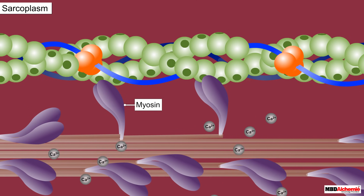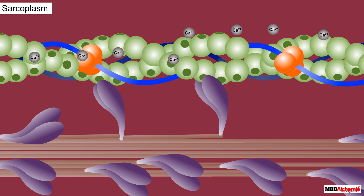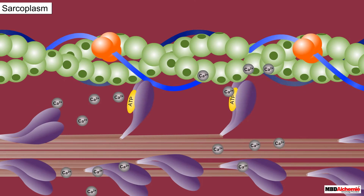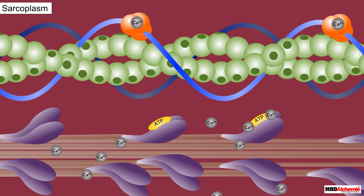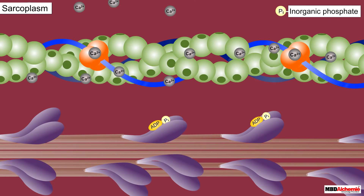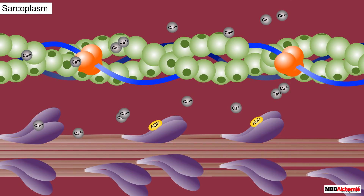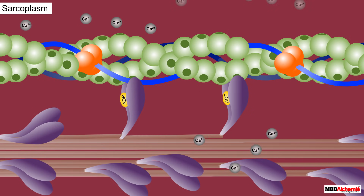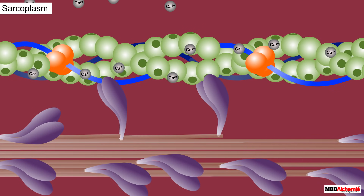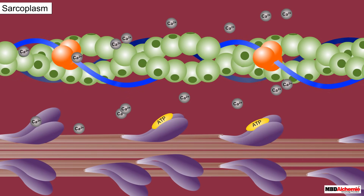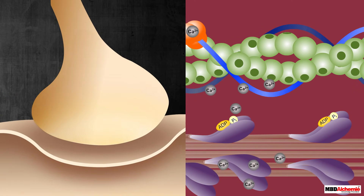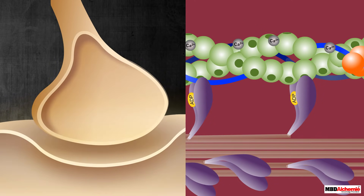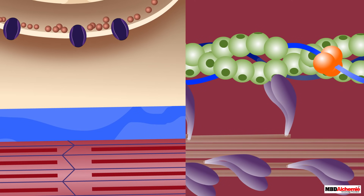The myosin remains attached to the actin until a new ATP molecule binds to the myosin head and the crossbridge is broken. The ATP is again hydrolyzed by the ATPase found on the myosin head, and the cycle of crossbridge formation and breakage is repeated, causing further sliding. This crossbridge cycling continues to repeat as long as the muscle fiber is excited by the signal from the CNS.